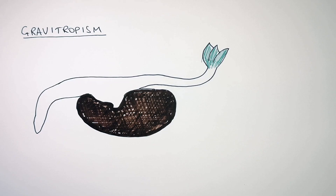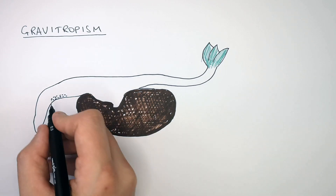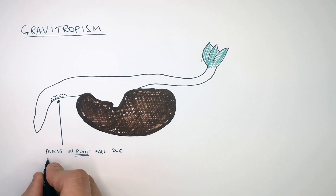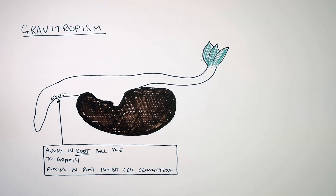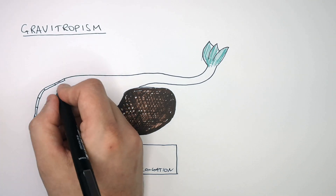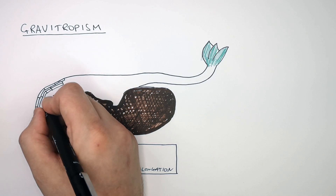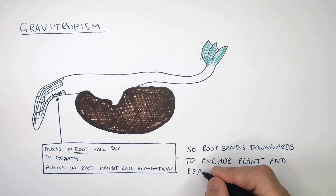When a seed germinates, the shoot — where the leaves are — needs to grow upwards towards light, but the roots need to grow downwards towards moisture and minerals. Gravitropism is when auxins fall to the bottom of the root due to gravity. Auxins in the root inhibit cell elongation, whereas auxins in the shoot stimulate cell elongation. So where there are auxins in the root, the cells are not going to elongate as quickly, and where there are no auxins, the cells elongate more quickly and bend downwards. The root therefore bends downwards to anchor the plant and reach moisture underground.